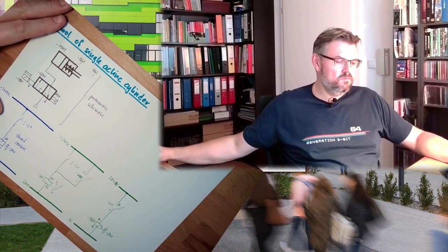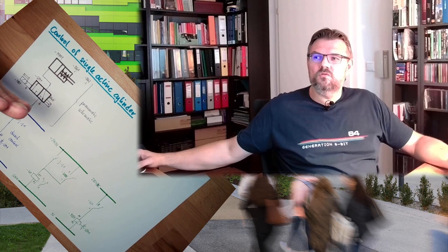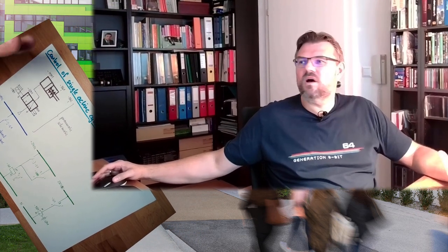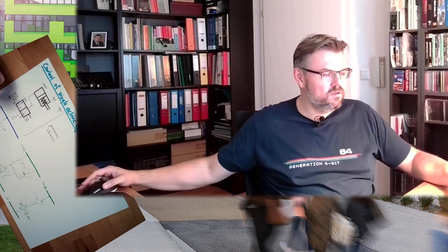Next time we want to use an impulse valve and store the last command. Let's see how this is working. We want to control the cylinder in a certain way that some things are done automatically. Right now we press the button, it moves, if we release the button it moves back. Next time it should do a little bit more automated system. For this time, thank you very much for listening and goodbye.